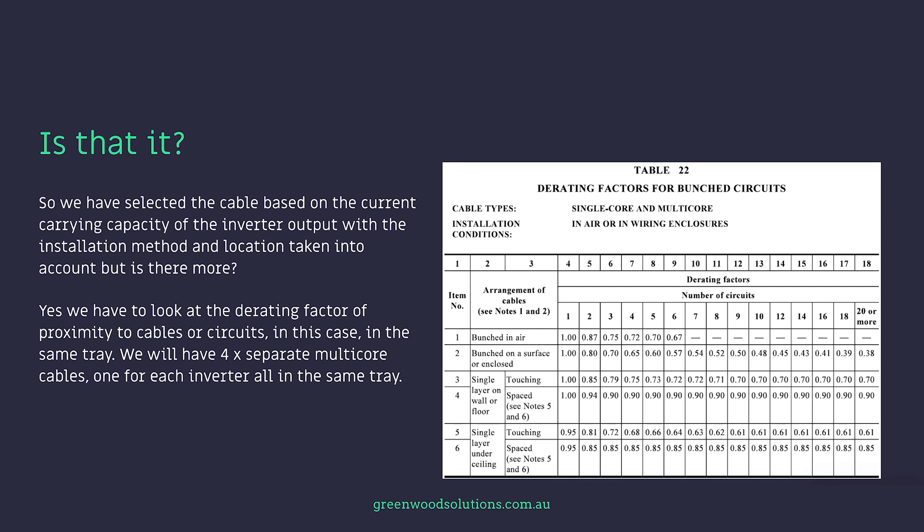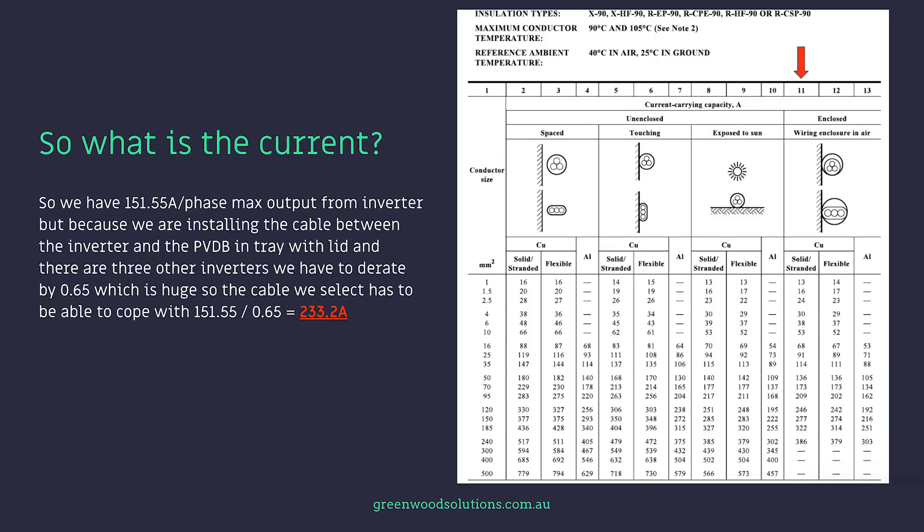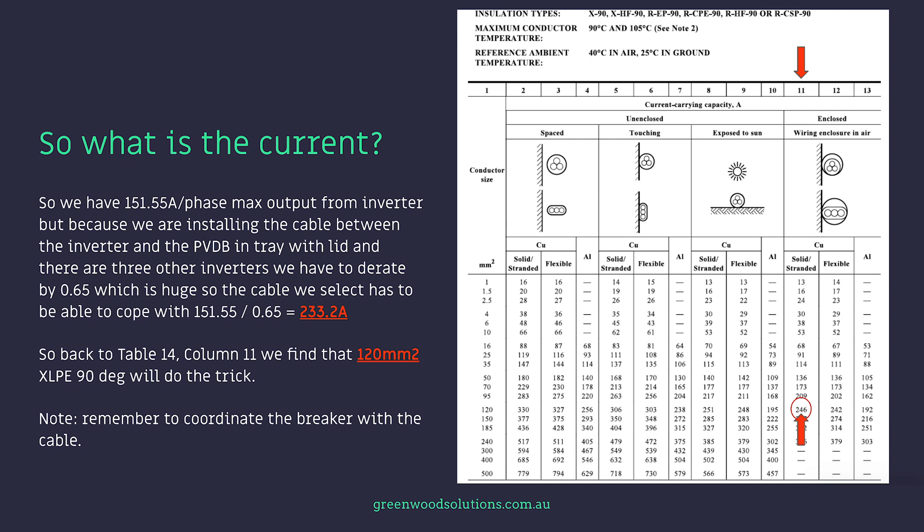We also have to look at the derating factor for proximity to other cables or circuits — in this case other cables in the same tray. We will have four separate multi-core cables, one for each inverter, all in the same tray. Looking at table 22 column 7 item 2, we find a derating factor of 0.65 because there are four inverters, each classed as a separate circuit. So the cable must cope with 151.55 amps divided by 0.65, which equals 233.2 amps. Going back to table 14 column 11, we find that 120mm² XLPE 90-degree cable will do the trick.